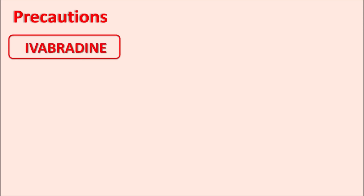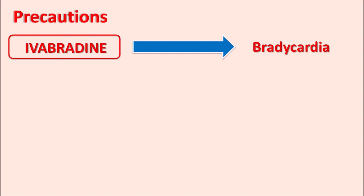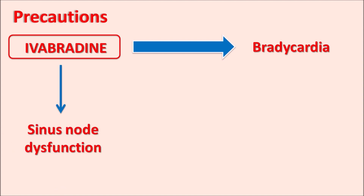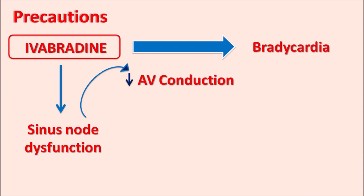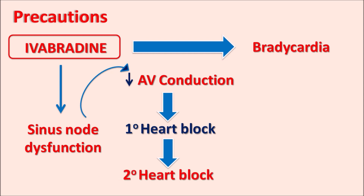One important precaution of Ivabradine is that it produces bradycardia in patients. Ivabradine can produce sinus node dysfunction which reduces atrioventricular conduction, and when this is significantly reduced it can produce conduction block. It may lead to first-degree heart block (delay in AV conduction) or second-degree heart block (further suppression of conduction). So Ivabradine may increase the risk of heart block, and should be carefully given in patients already having first or second-degree heart block.